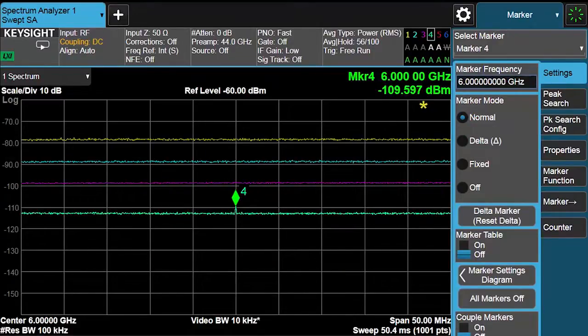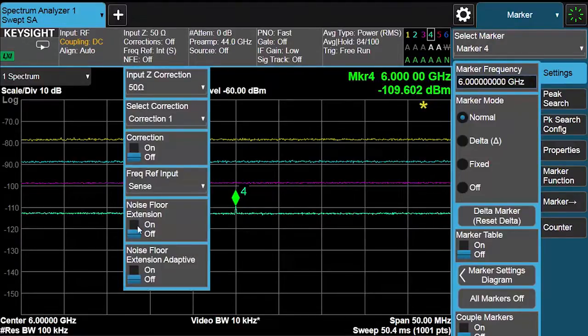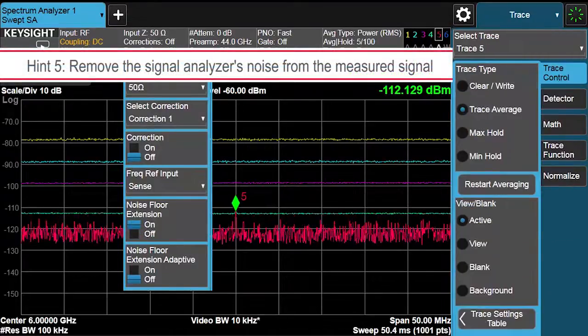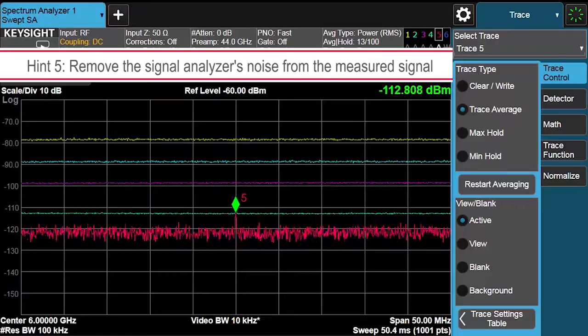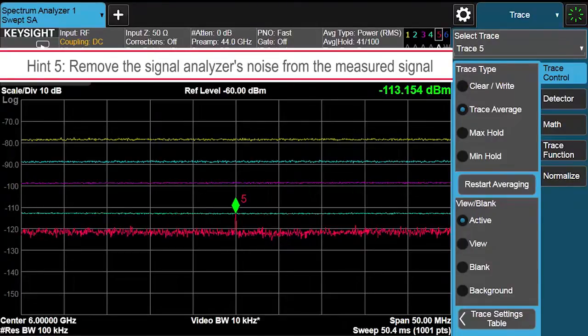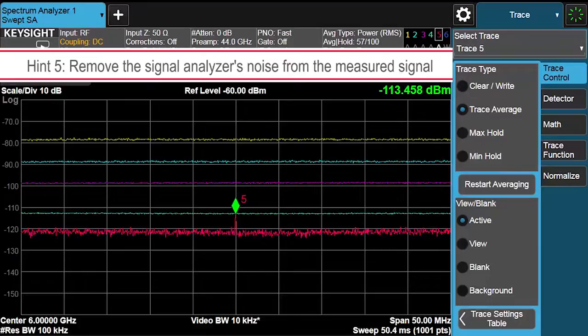To even further improve your sensitivity, you can use a feature that is unique to Keysight's X-Series signal analyzers, Noise Floor Extension. I'll go ahead and turn that on. When using Noise Floor Extension feature, you can actually subtract the noise contribution of the analyzer from your measurement real-time. The instrument stores internal algorithms that are applied and automatically updated even if you change your settings, including frequency, resolution, bandwidth, span, and even detector types.